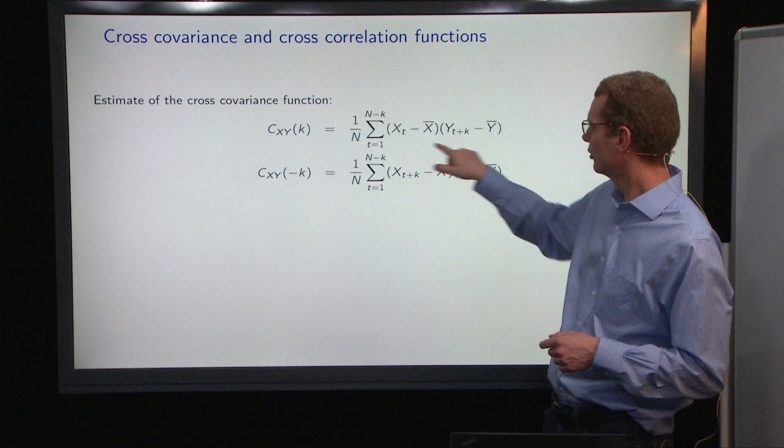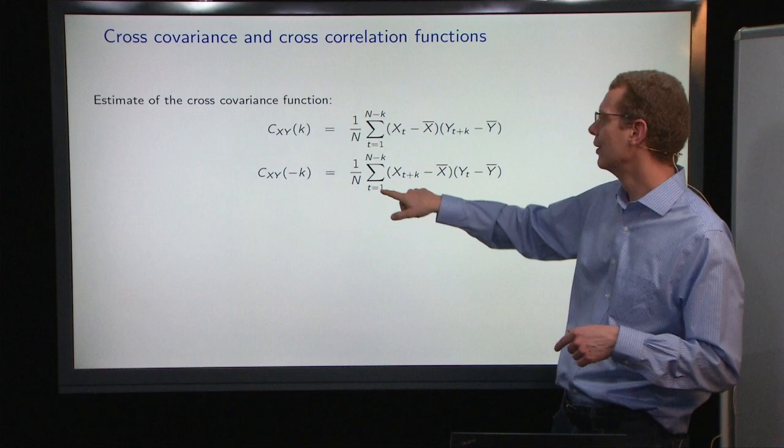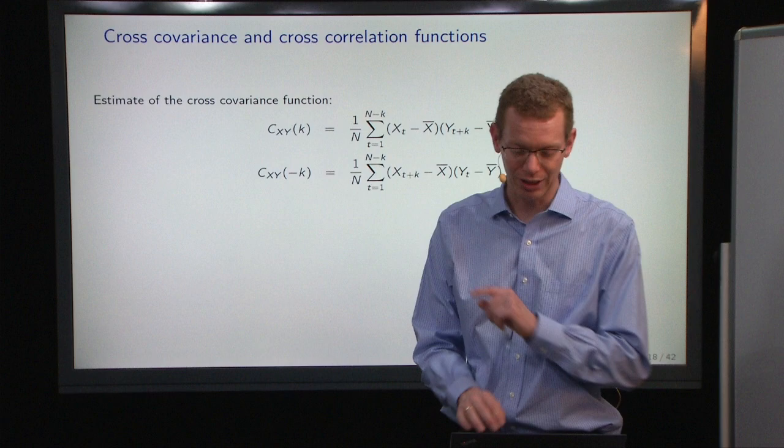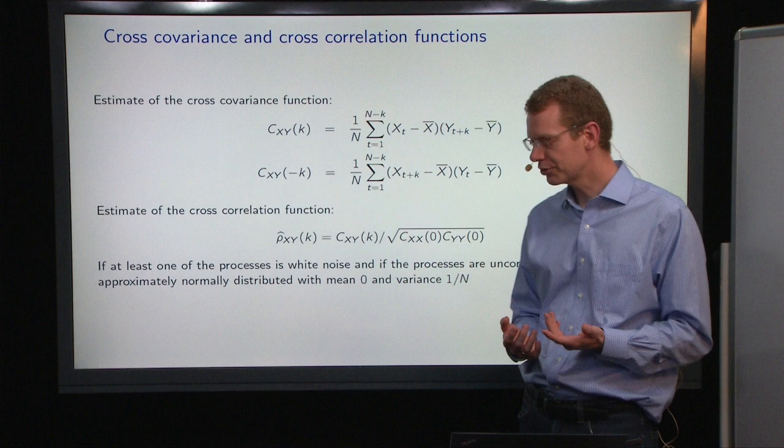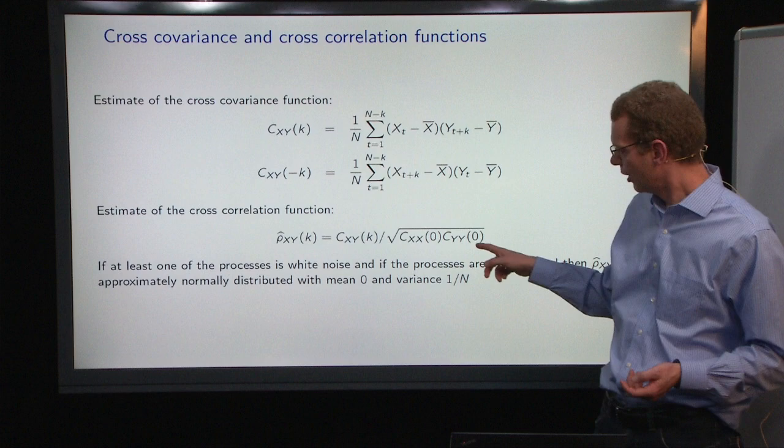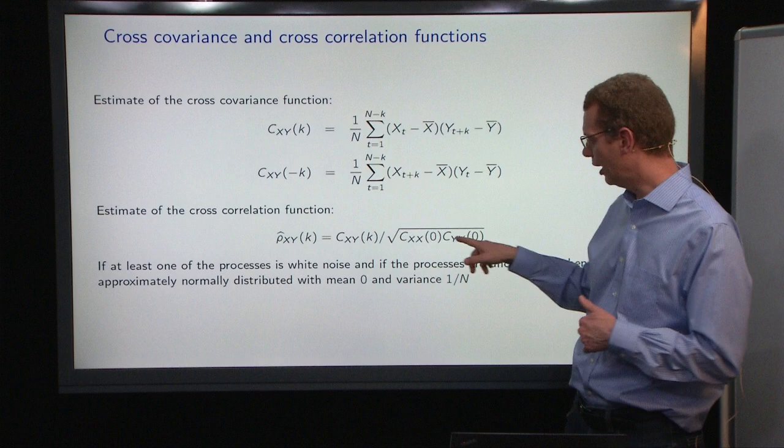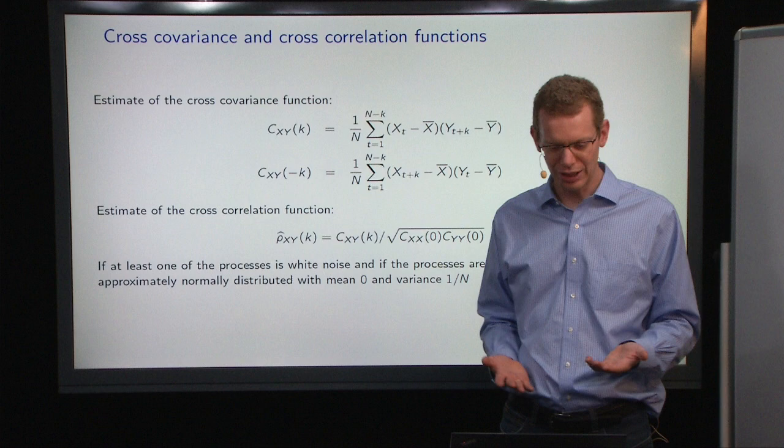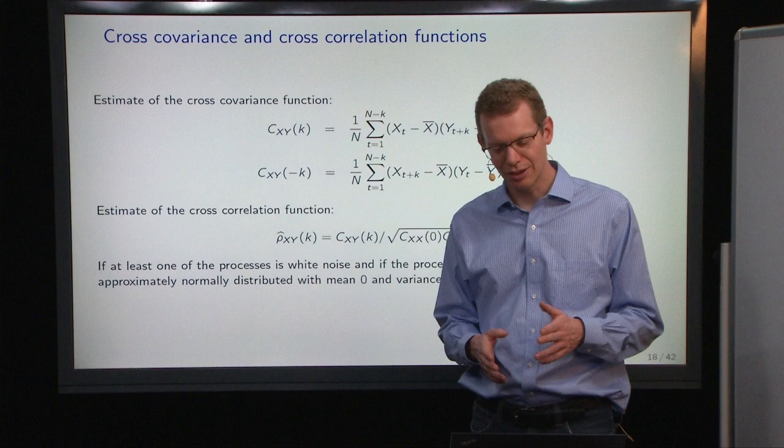We could also use the same expression and then just shift the sum to go to n and then start at 1 plus k. And the cross-correlation function, well, you just take the cross-covariance function and normalize that by the square root product of the variance of the input and the output, which is the usual calculation for normalizing to get a correlation.